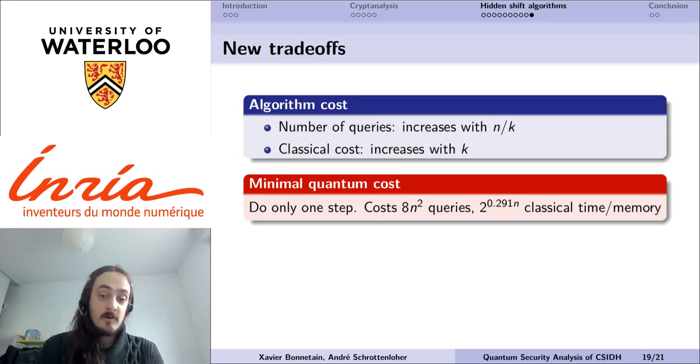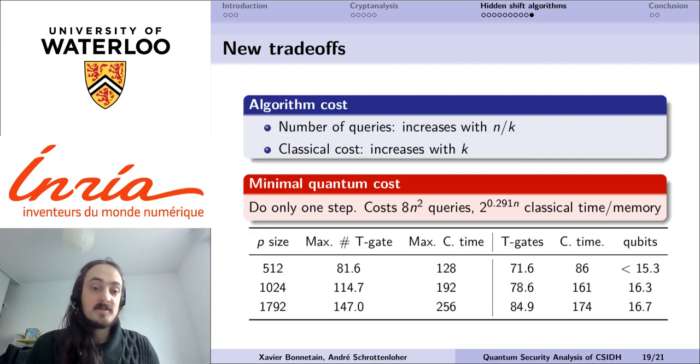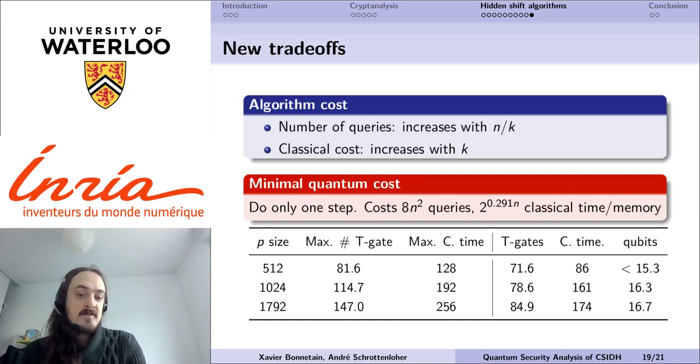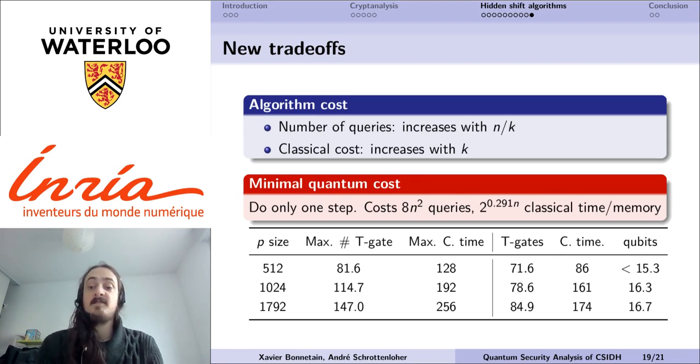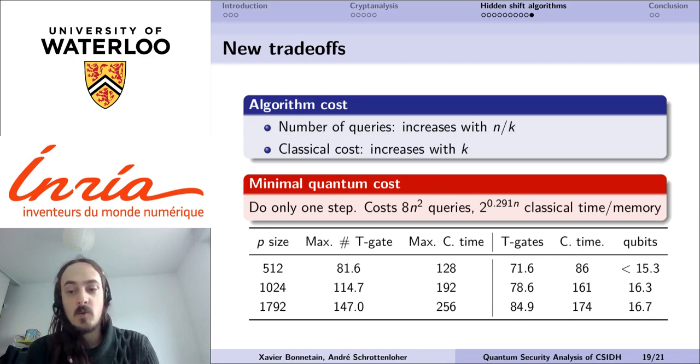From this cost estimate, we can obtain concrete costs by plugging the cost of the oracle, and we see that we have, as expected, a lower T-gate count than before. We also have a lower number of required qubits, because here we are bounded by the number of qubits in the quantum oracle, but at the expense of having a much larger classical time for the attack.